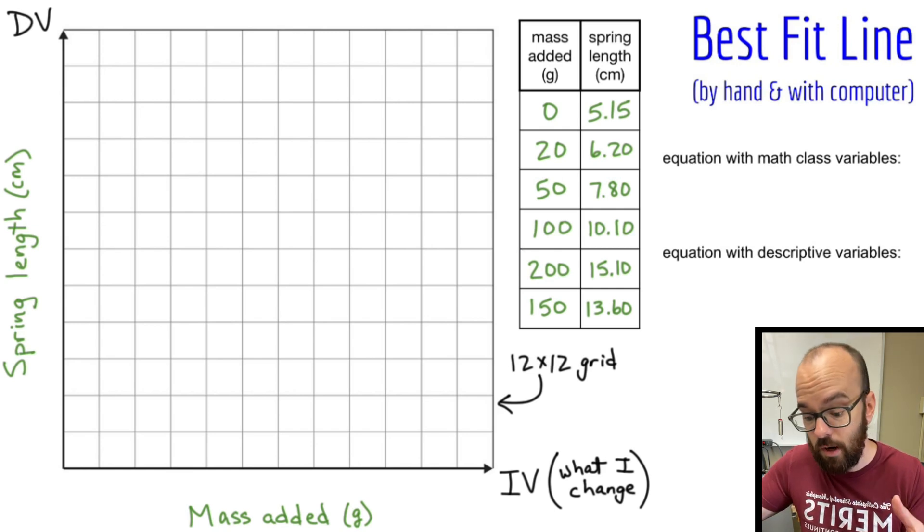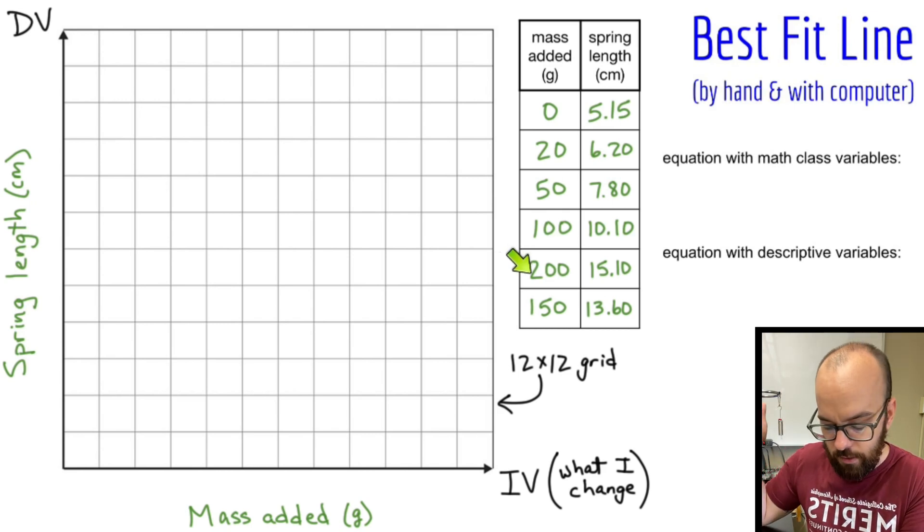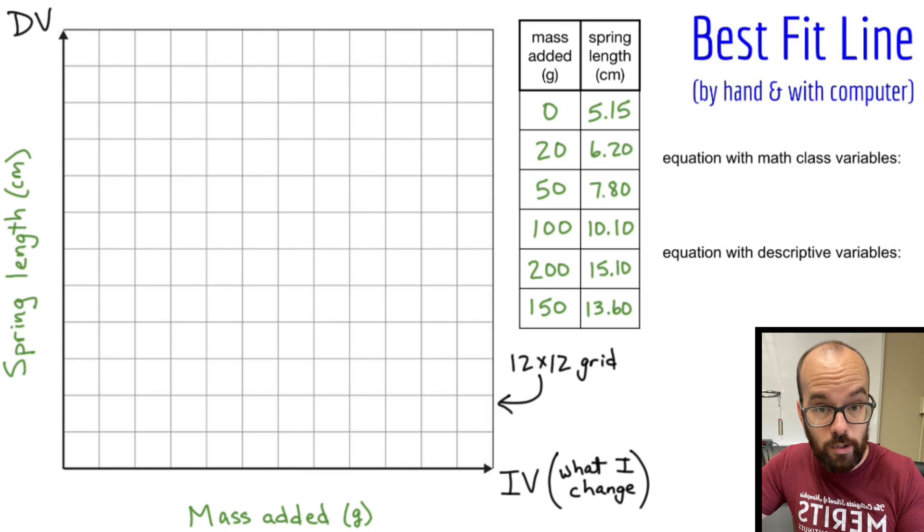So instead of 10, let me try 20. If I have 12 boxes and each one is 20, 12 times 20 would be 240. That's going to get me up above 200 without going way over. So I'm going to go up by 20 in each box on my horizontal axis.